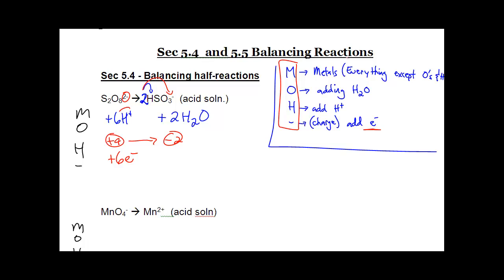So, my final balanced half reaction is S2O8²- plus six H+ plus six electrons goes to two HSO3- and my last part is two H2O.